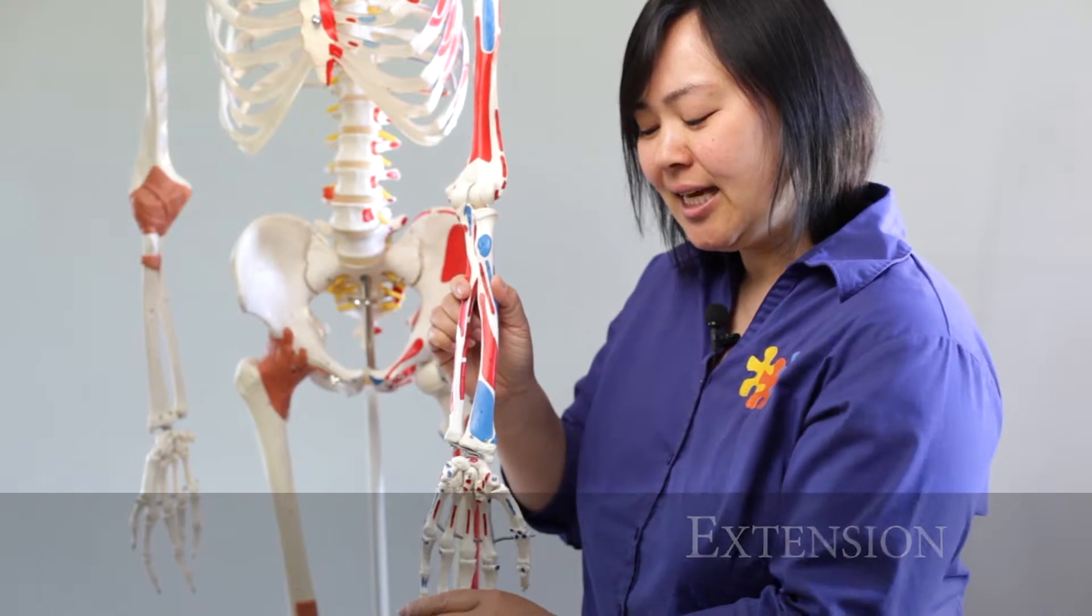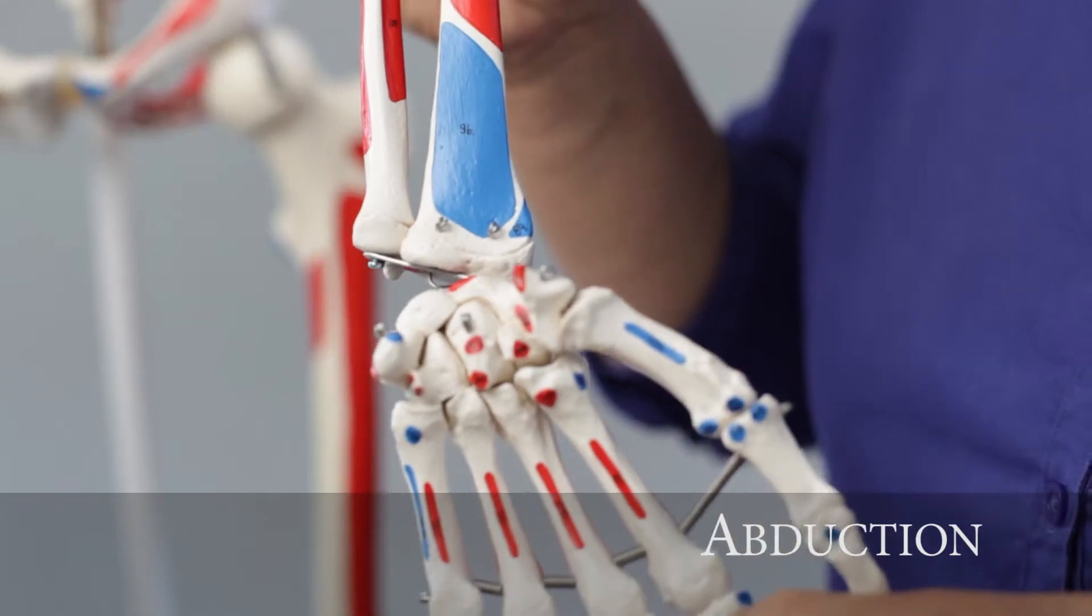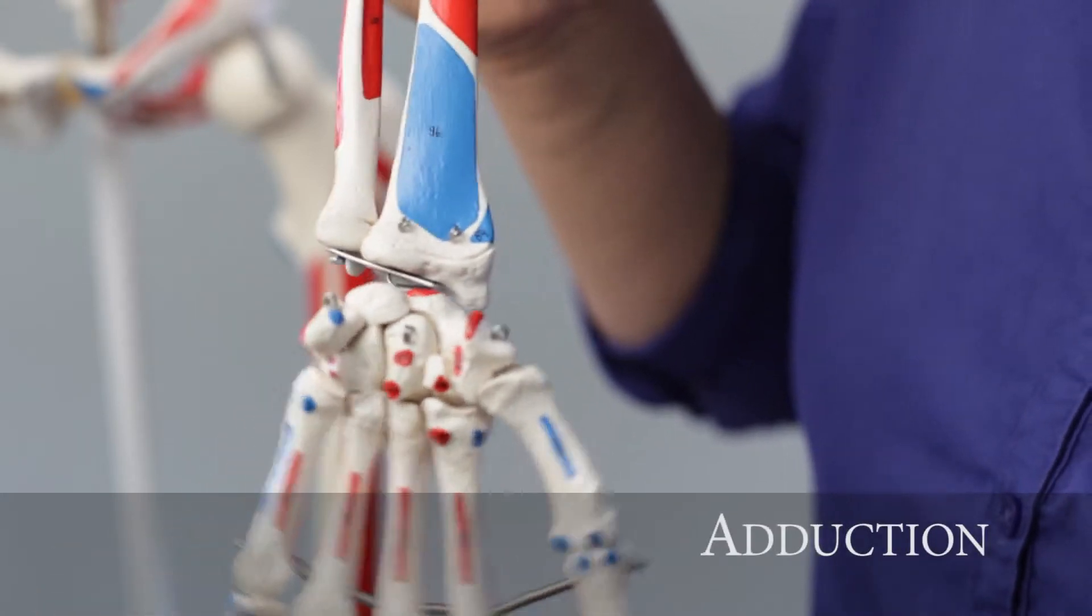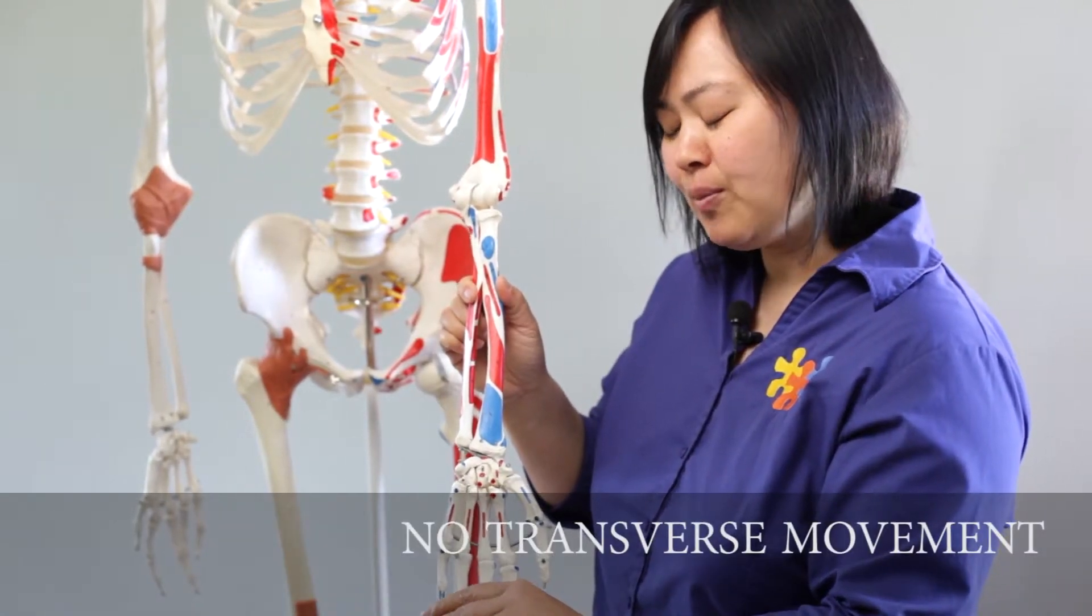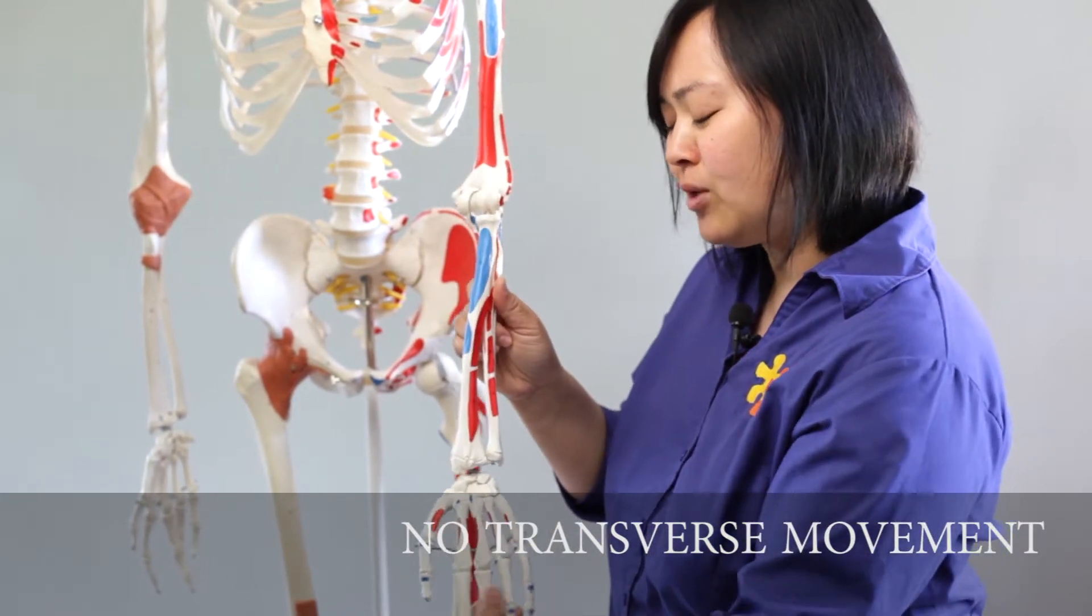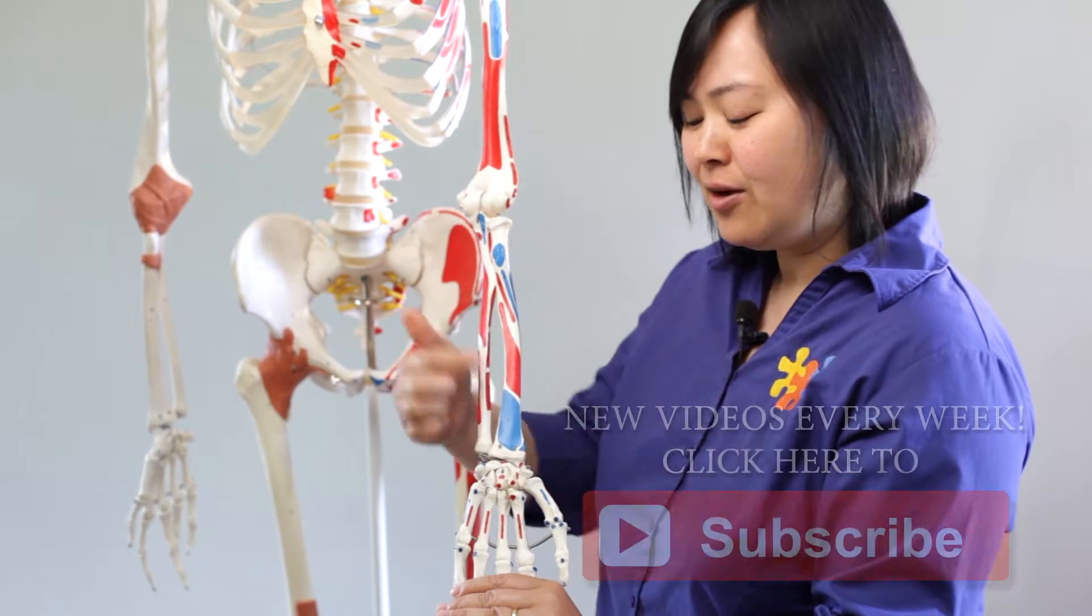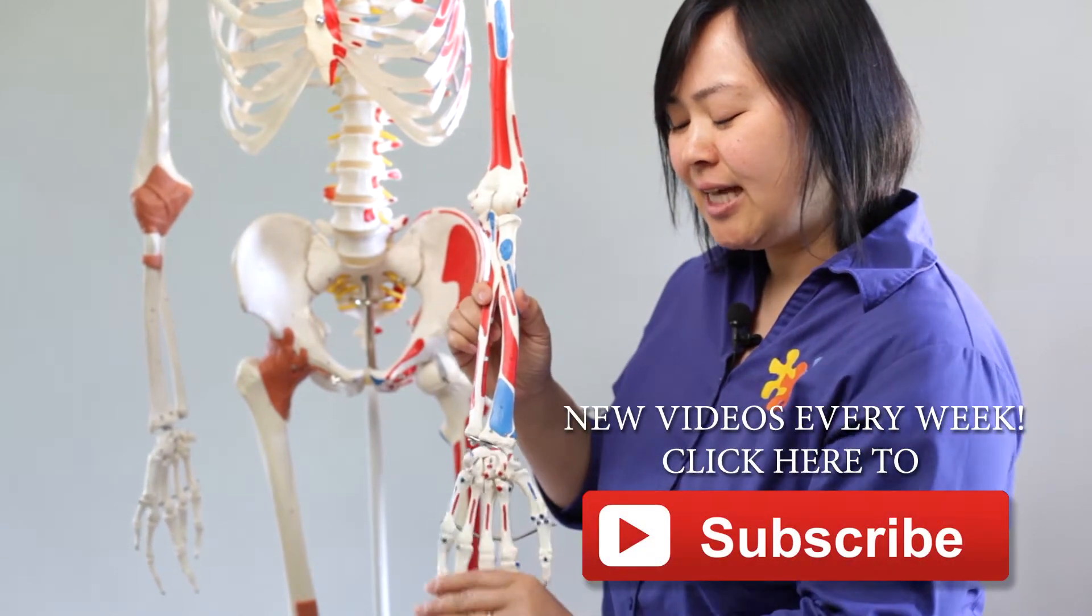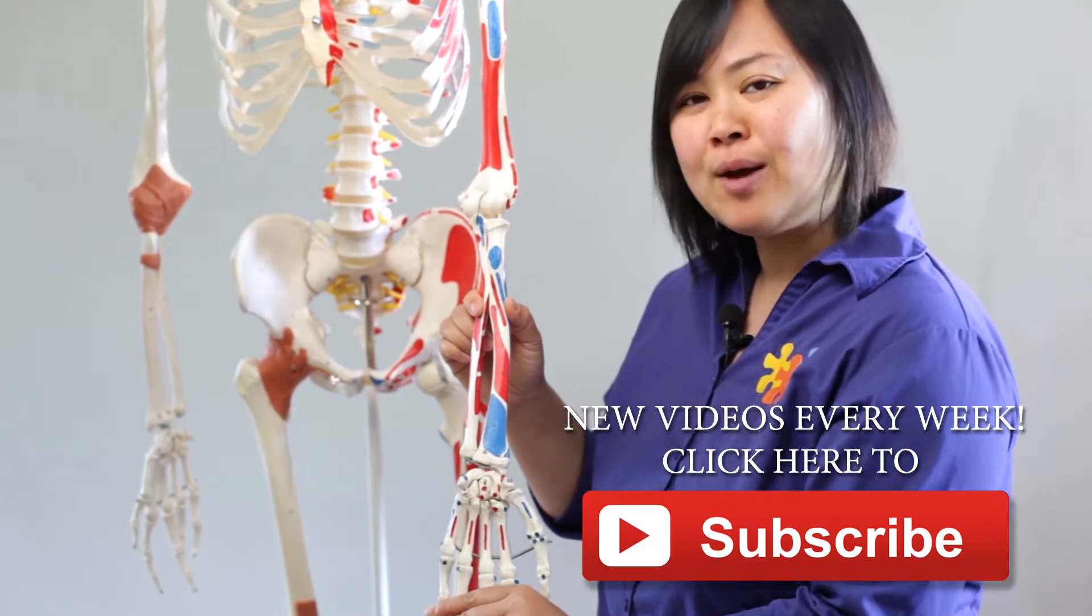When we think about movement in the sagittal plane, we have flexion and extension. In the coronal plane, we have abduction and adduction. We don't have any movement in the transverse plane of the carpal bones because what we see is pronation and supination, and that happens in the forearm. Focusing on the wrist, we have flexion and extension, abduction and adduction as the prime movements.